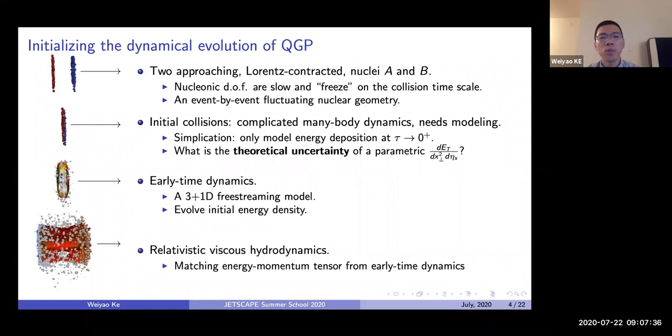At the collision point, there are very complicated dynamics, many-body dynamics going on. It's very hard to go from first principle to predict what's produced at mid-rapidity. The way we approach this is to model energy production as a function of transverse coordinates at mid-rapidity at this very initial time using a parametric model, which of course introduces certain theoretical uncertainties. After that, each stage of the dynamics is governed by well-motivated dynamical models, which will not be the focus of this lecture.